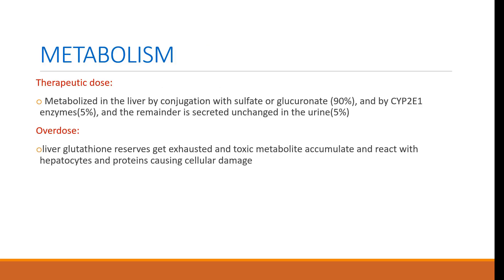Metabolism: At therapeutic doses, acetaminophen is mainly metabolized in the liver by conjugation with sulfate or glucuronate. About 5% is metabolized by the enzyme CYP2E1, and the remainder is excreted unchanged in the urine. At overdose, liver glutathione reserves become exhausted, and toxic metabolites accumulate and react with hepatocyte proteins, causing cellular damage.